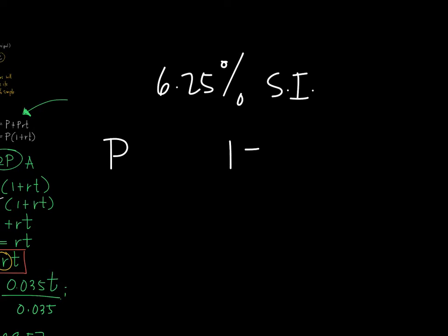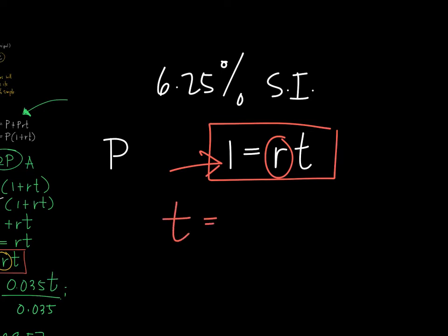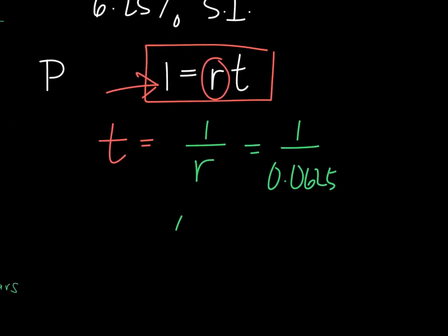That formula that we have seen earlier, 1 is equal to RT, is the only formula that you need. Because this is only needing the value of R, and 1 is always 1. So to find the time, the time is simply 1 divided by R, and if R is 6.25%, then that's 1 over 0.0625. And immediately, it will give you the value for the time.